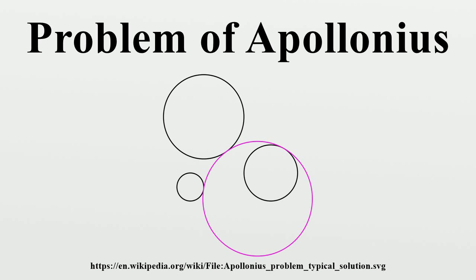The general statement of Apollonius' problem is to construct one or more circles that are tangent to three given objects in a plane, where an object may be a line, a point, or a circle of any size. These objects may be arranged in any way and may cross one another; however, they are usually taken to be distinct, meaning that they do not coincide.